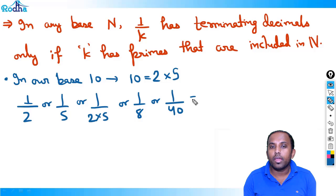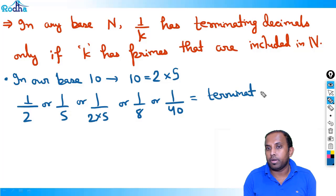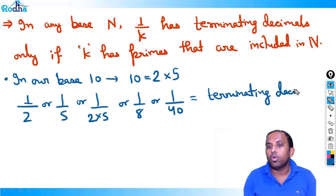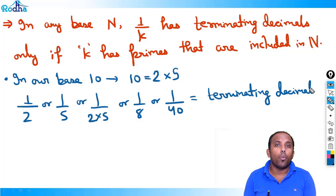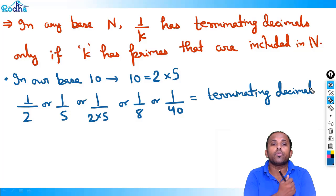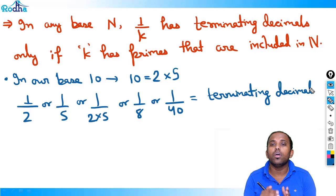All such numbers have terminating decimals, meaning you won't get a non-terminating decimal. Obviously 1/2 = 0.5, 1/5 = 0.2, 1/8 = 0.125, 1/40 also — all are terminating decimals.